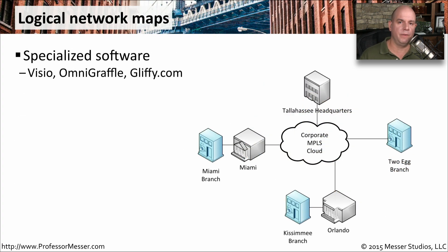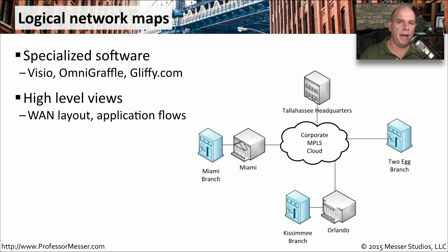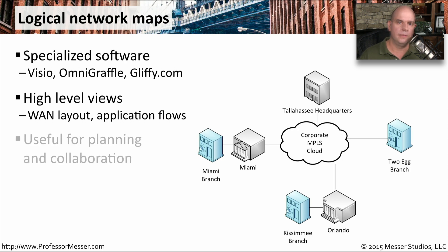You generally want to have electronic versions of these network diagrams. You might use a standalone program like Visio or OmniGraffle, or even online versions like Gliffy.com. A logical network map would be a very high-level view of a network layout — it might be a wide area network or a local area network, or it may just show the flow of an application. This isn't necessarily pointing out every router and every switch, but instead giving you an idea of the overall traffic flow and how the network is organized.